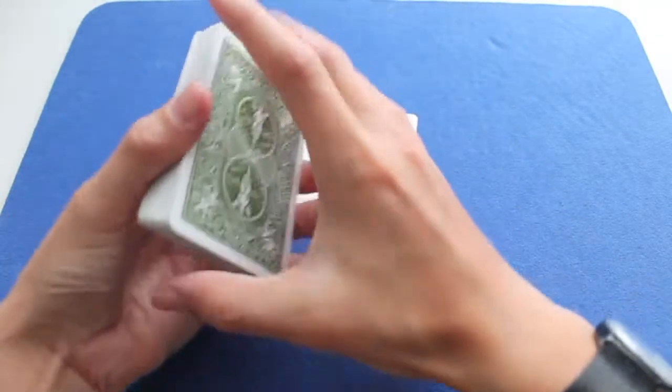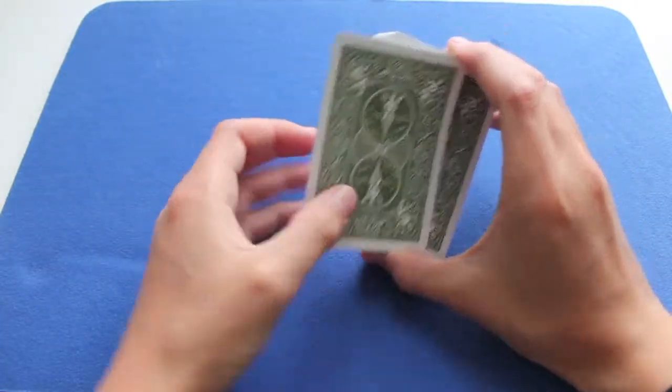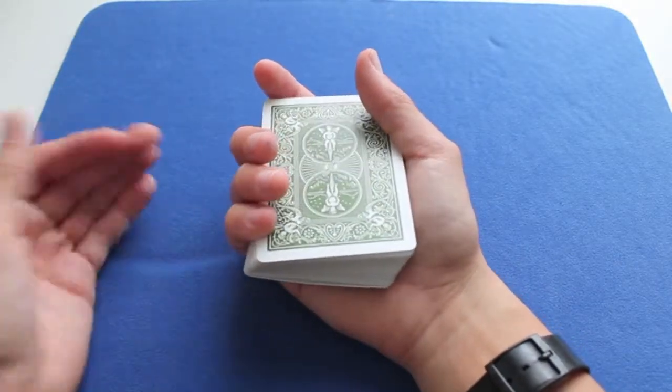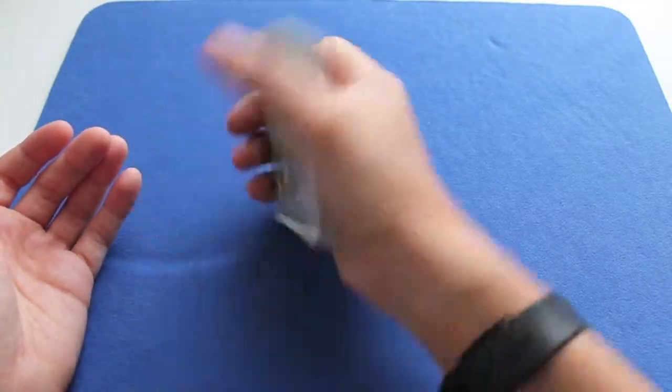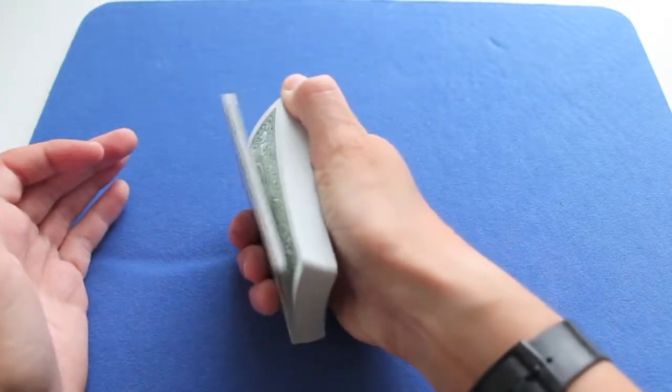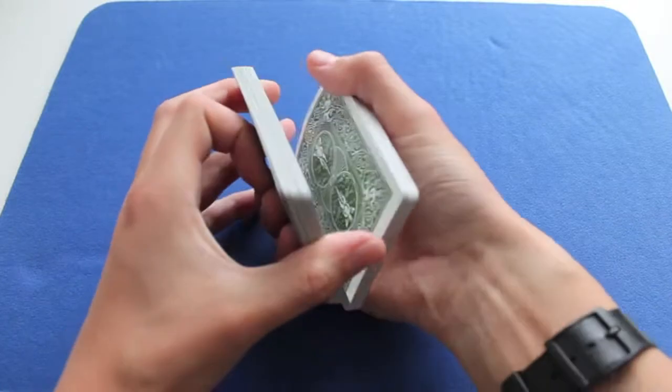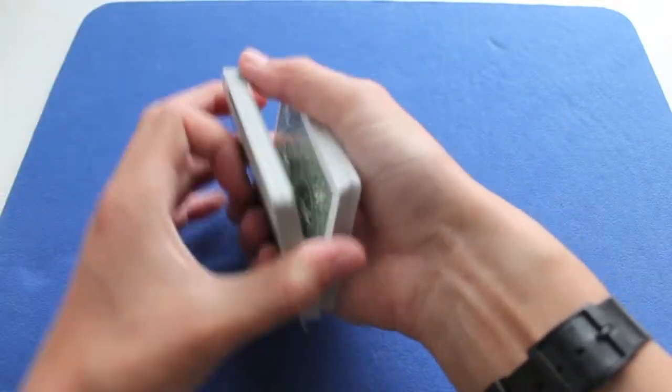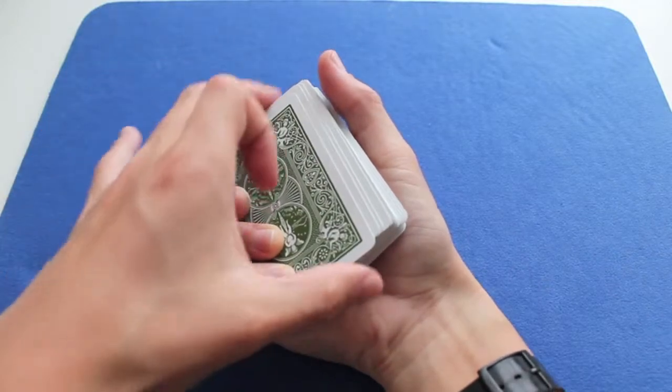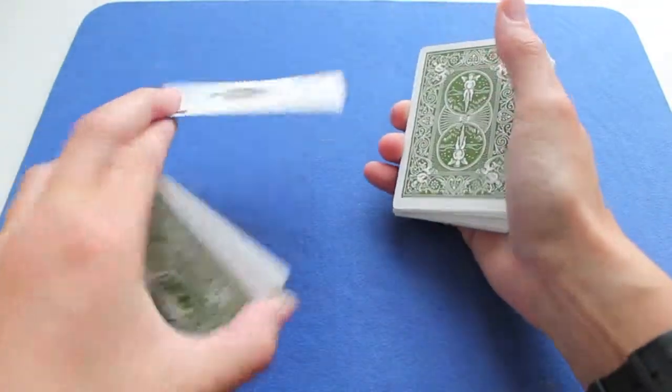So now I'm going to show you the Dribble Force. For the Dribble Force, you want to put the Force card on the top. And what you do is you hold it like this in normal grip in your right or left hand. And you curl your index finger under the deck like this and you square it up. And now you're going to dribble down with your thumb. And when they say stop, let's say they say stop here. You say, are you sure? And you move your hand like this and you steal the top card by pushing down when you lift up this pack.